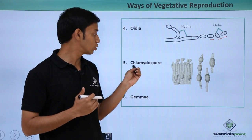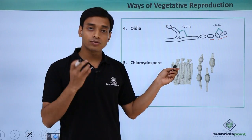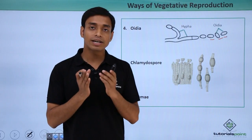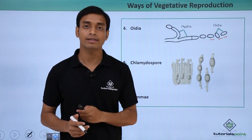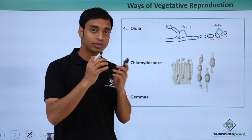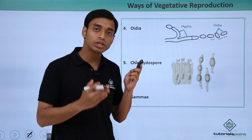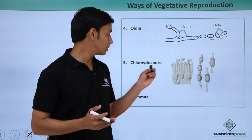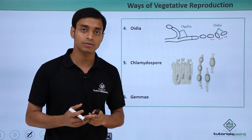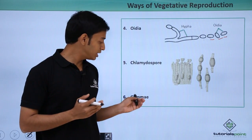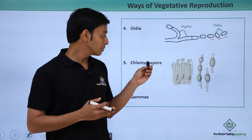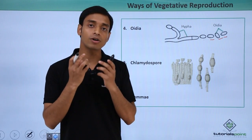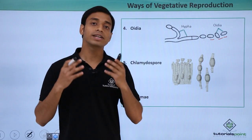The fifth type is the formation of chlamydospores. These spores are formed inside the hyphae only under unfavorable conditions when conditions are not favorable for growth or survival. They have very thick walls and are highly resistant structures that can survive unfavorable conditions. When conditions become favorable again, chlamydospores germinate into a new organism. Similar to chlamydospores are gemmae, but gemmae do not have very thick walls and are not very durable or resistant, so they can only tolerate moderate variations in environmental conditions.